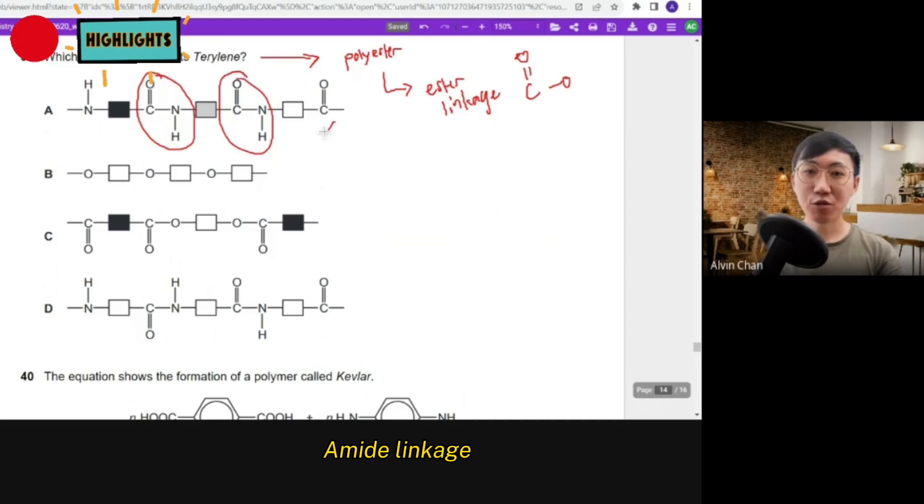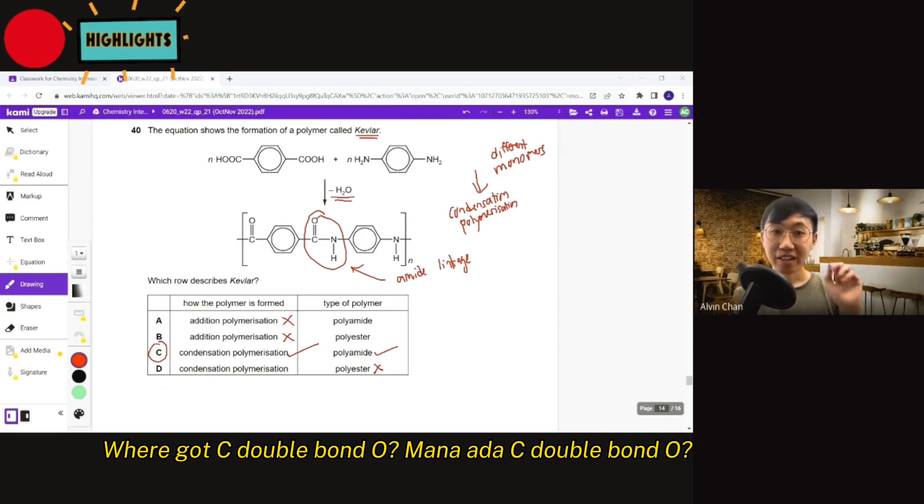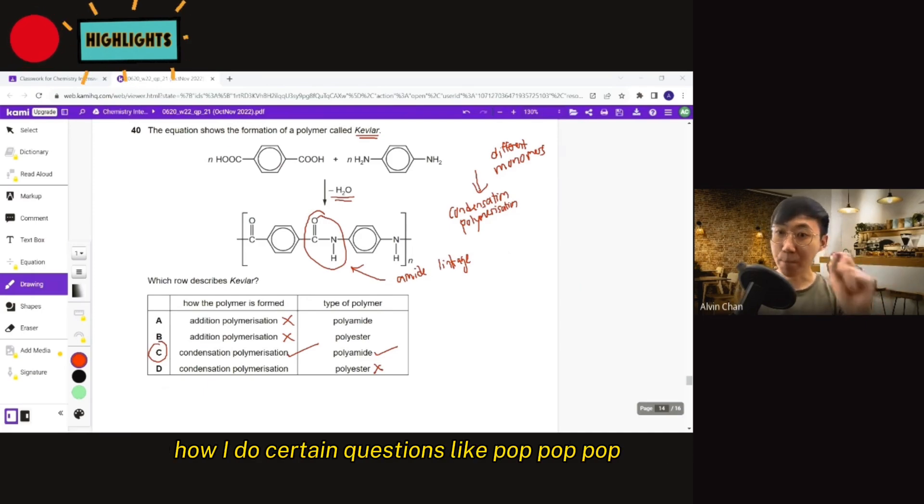Amide linkage. Out. Where got C double bond O? Mana ada C double bond O? How I do certain questions like pah pah pah.